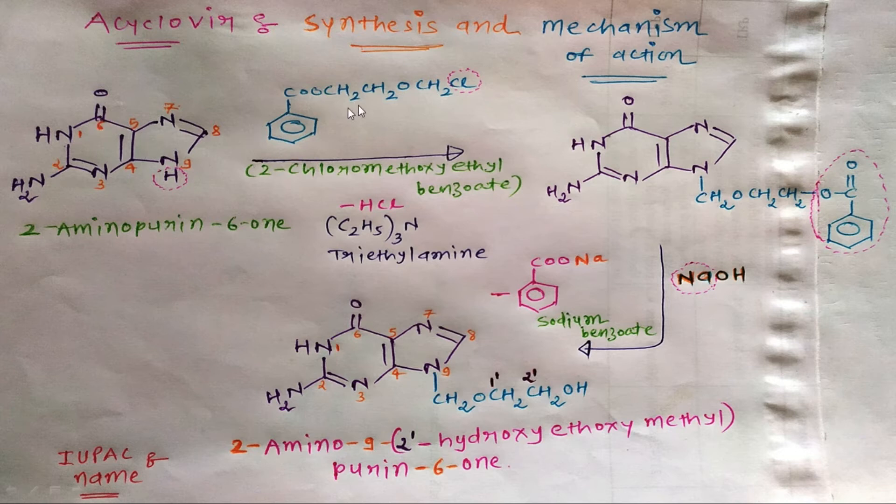This compound will be treated with 2-chloromethoxyethylbenzoate. Here this carbon is numbered 1, this is numbered 2. On the second carbon, chloromethoxy is present. Hydrogen and chlorine will be released as HCl. This reaction will take place in presence of triethylamine for basicity maintenance. Hydrogen and chloro will be removed, and this methoxy will be substituted at this nitrogen to form the product.